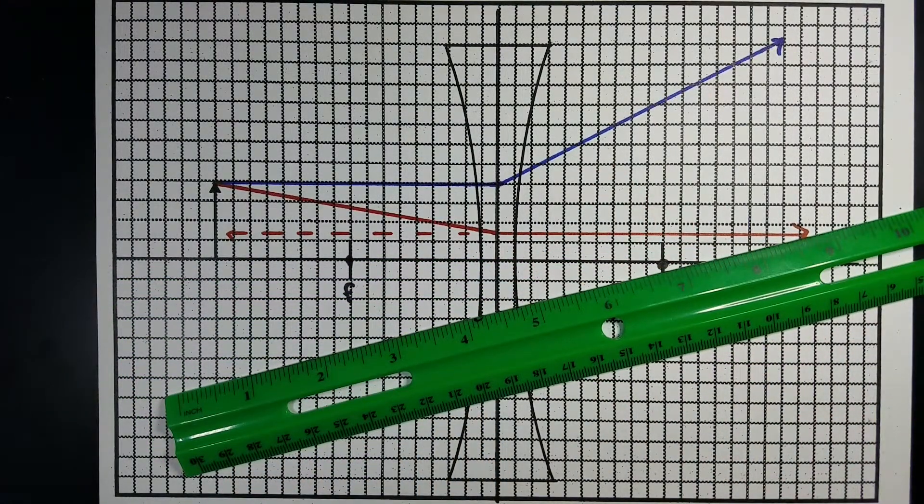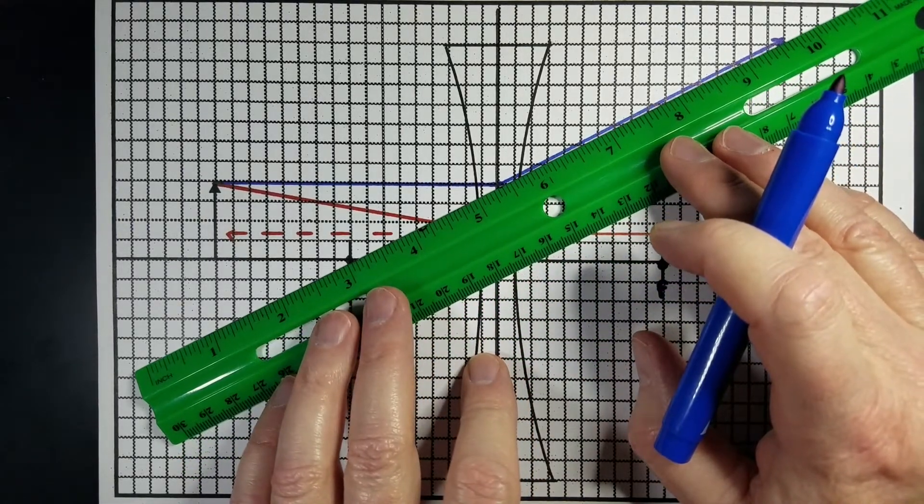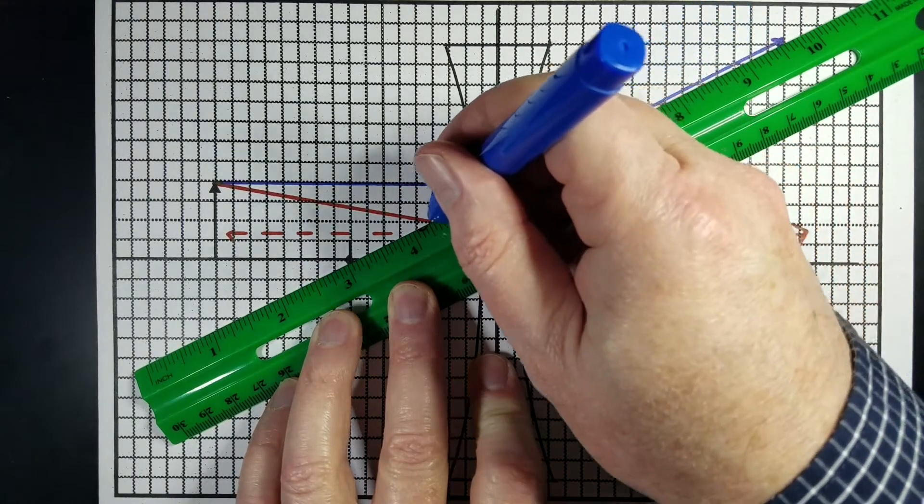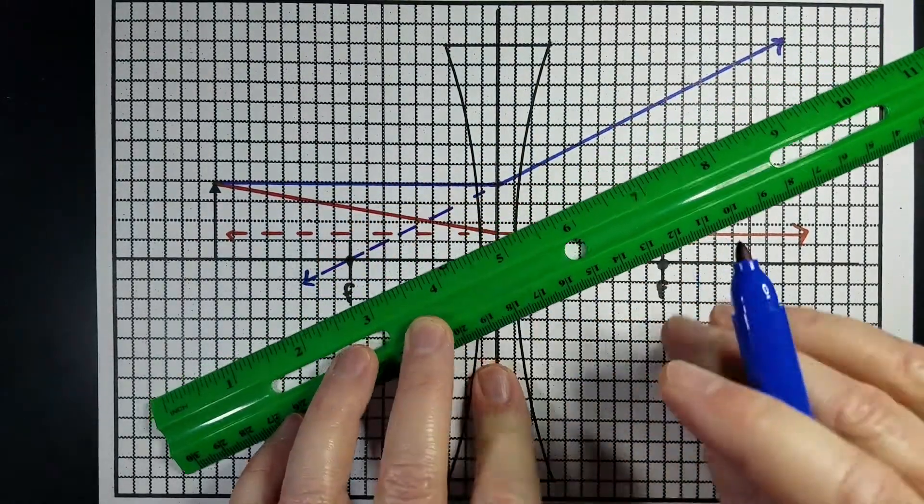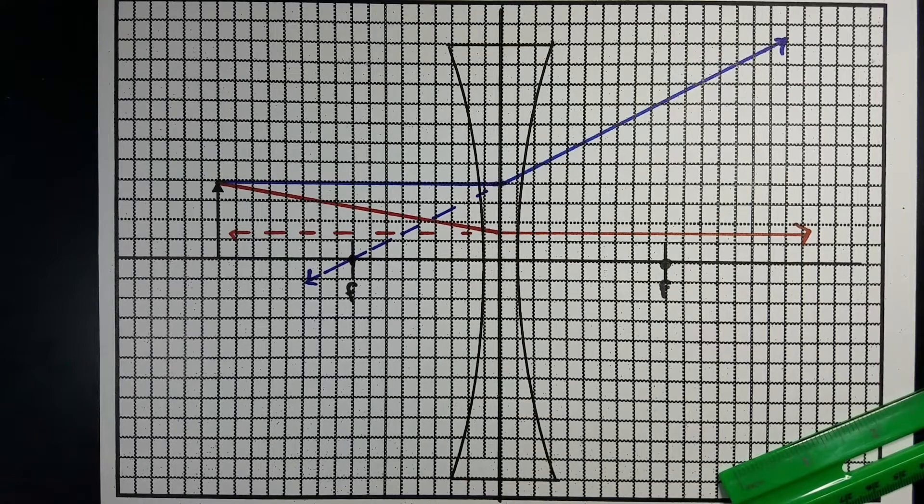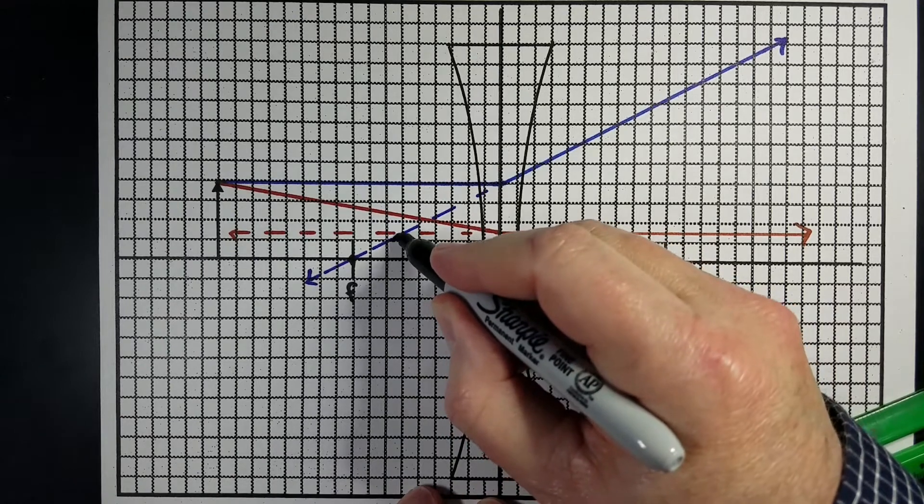And we'll have another one from our first ray, the blue one I drew, heading back towards the focal point on that side. And where those two cross, that's where the image should be. So it should be right about there.